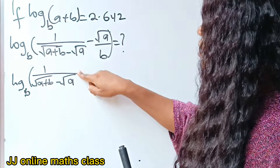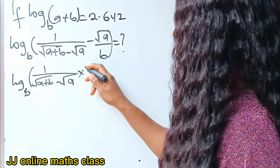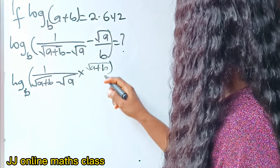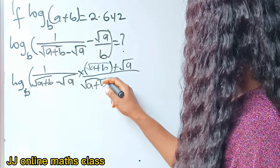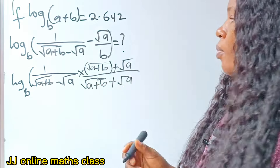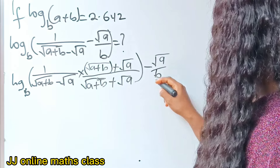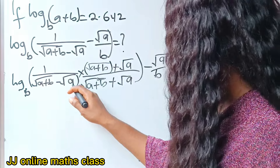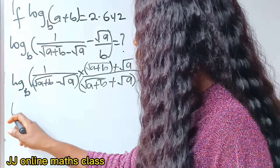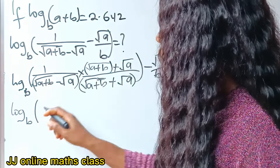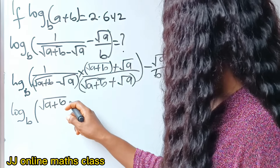I need to rationalize this, and to do that we are going to multiply the numerator and the denominator by the conjugate. So we multiply by root (A plus B) plus root A, divided by root (A plus B) plus root A. For the second term, no rationalization is needed, so it remains minus root A over B.